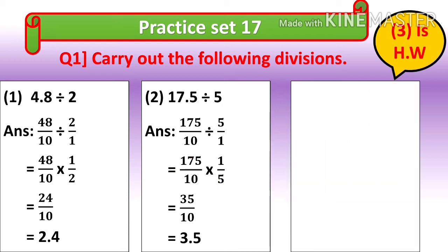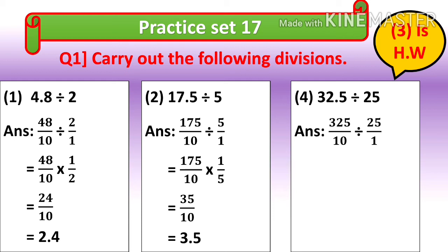Question number 4: 32.5 divided by 25. Convert the decimal into fraction: 325 upon 10, divide by 25 upon 1. The next fraction is 25 upon 1, and its reciprocal is 1 upon 25.